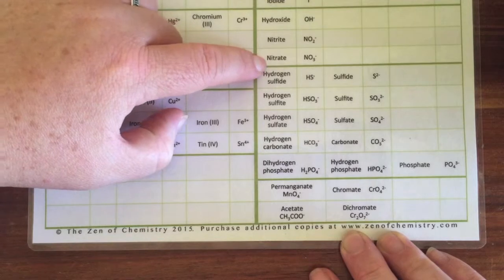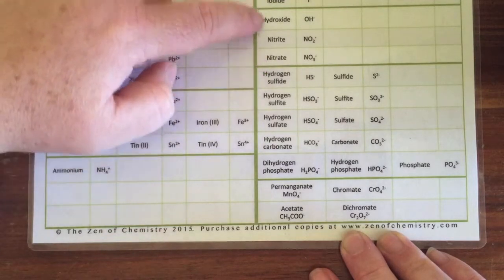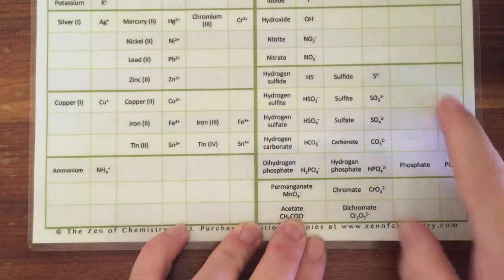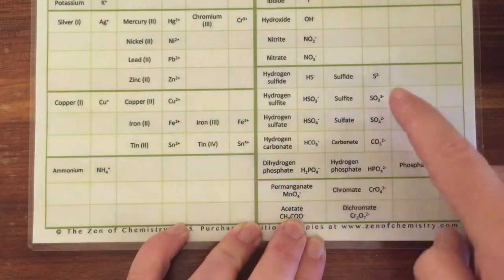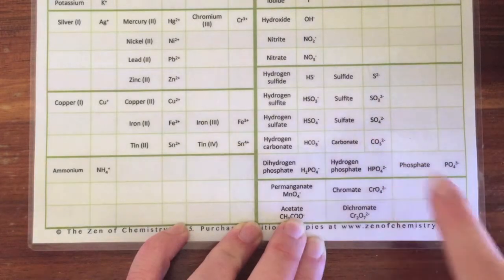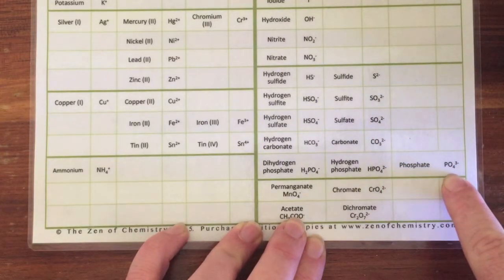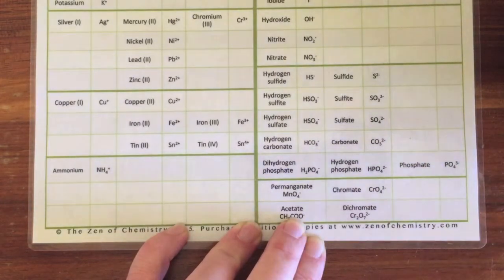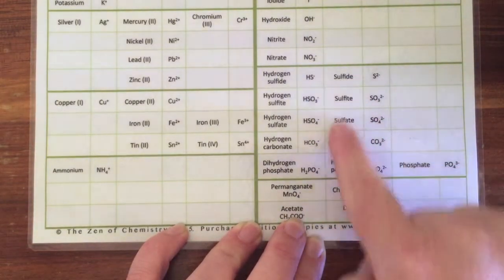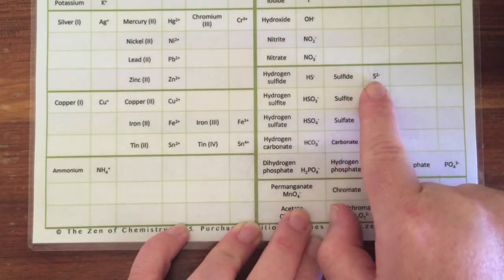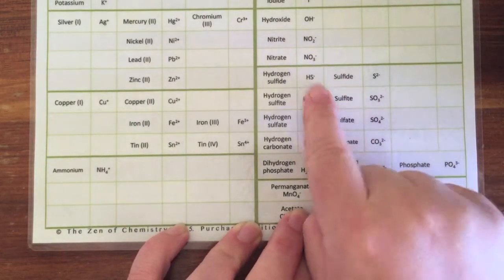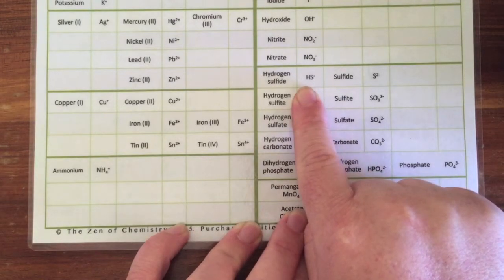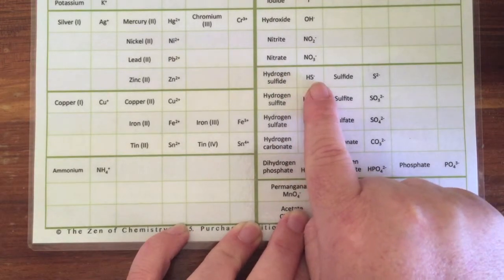In the next box we've got sulfide, sulfite, sulfate, carbonate, and phosphate. They're all minus two except for phosphate. If we look at these four here, we've got sulfide S2-.